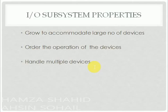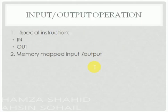Here are the properties of the input output subsystem. Property number one is to accommodate a large number of devices. Property number two is the order of operation of the devices. Property number three is that it handles multiple devices.